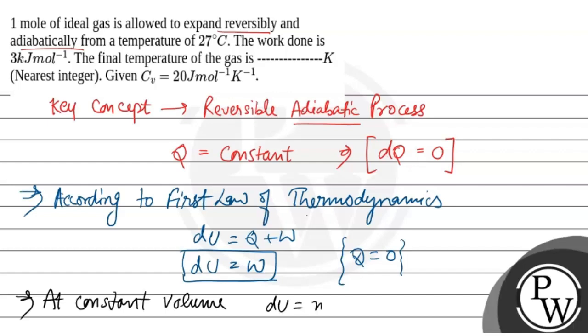Du equals nCv dT, where Cv is the heat capacity at constant volume.